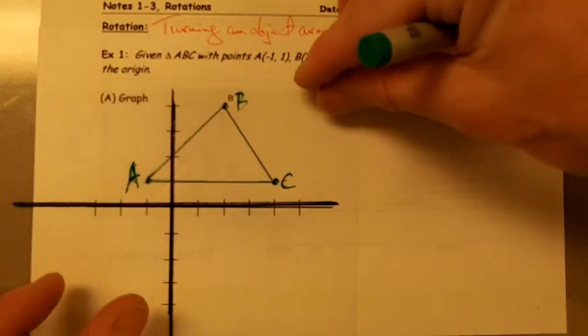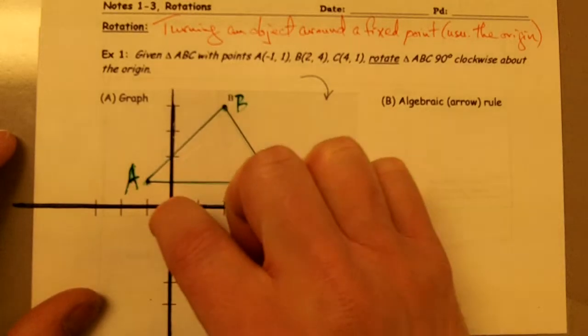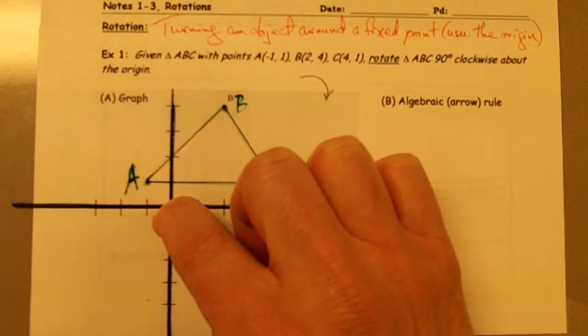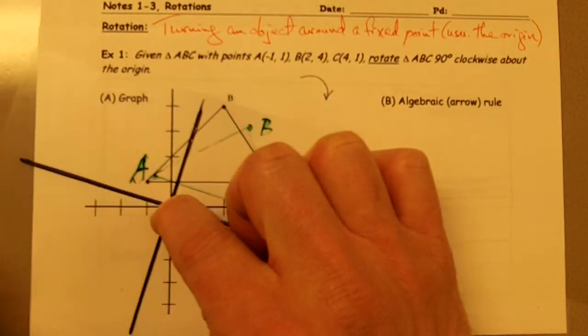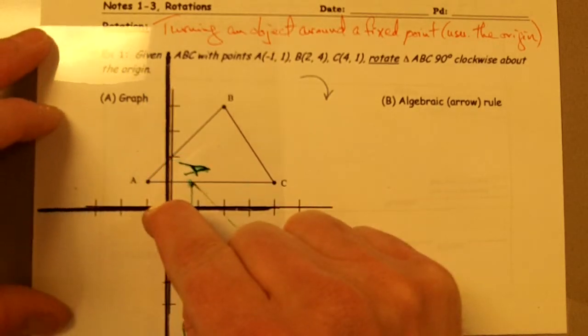Now I've got my triangle copied on my transparency here, and I want to rotate my triangle 90 degrees around the origin. So I'm going to pretend like I've got a pen or thumbtack stuck right here in the origin, and I'm just going to rotate my set of axes 90 degrees clockwise.